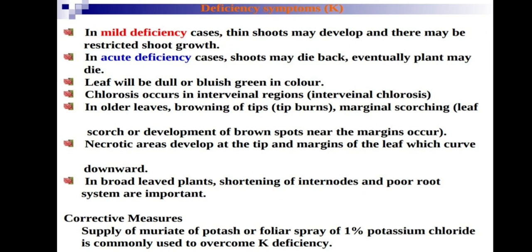Leaves become dull and bluish-green, and interveinal chlorosis occurs — loss of chlorophyll in the interveinal region. Browning of tips and marginal scorching (leaf scorch) develop, with dark brown spots appearing near the margins. Necrotic areas develop at the tip and margins of leaves, which curve downward. Tips and margins undergo tissue death.